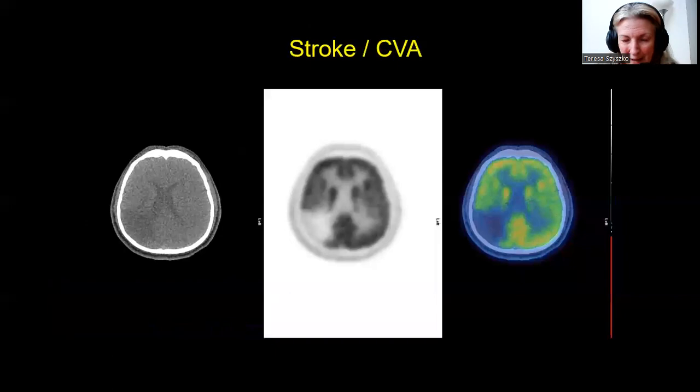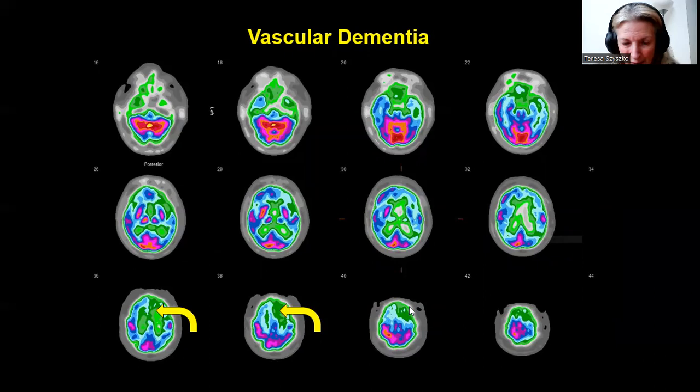Here we have a large stroke — a large photopenic deficit in the right parietal region with corresponding low density on CT. Here we have another infarct in the left frontal area with quite marked left frontal hypometabolism. You can have multiple infarcts or a single infarct — this is vascular dementia.